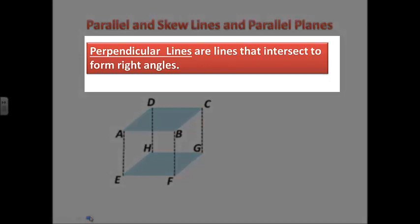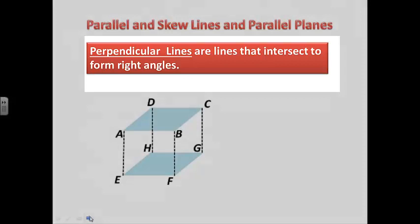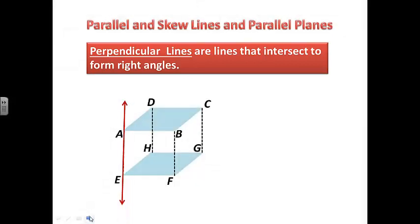Perpendicular lines are lines that intersect to form right angles. Line AE is perpendicular to line EF, and we would write it: line AE is perpendicular to line EF. We have a new symbol here — this just means that these lines are perpendicular.